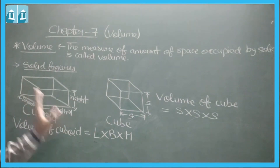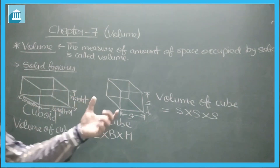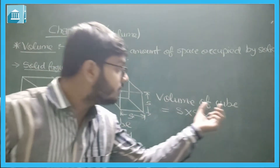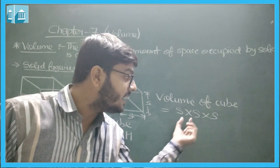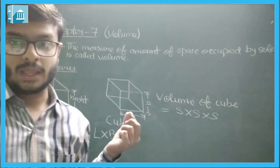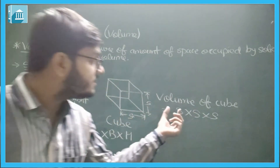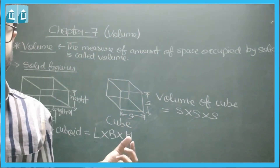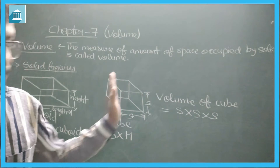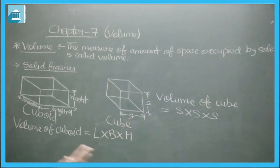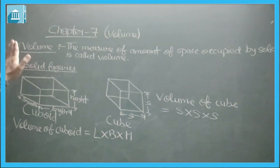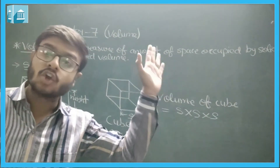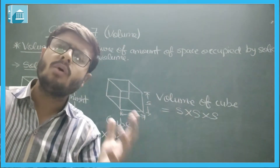For a cube, all sides are equal. The volume of a cube is side × side × side. That is the total introduction of this chapter.